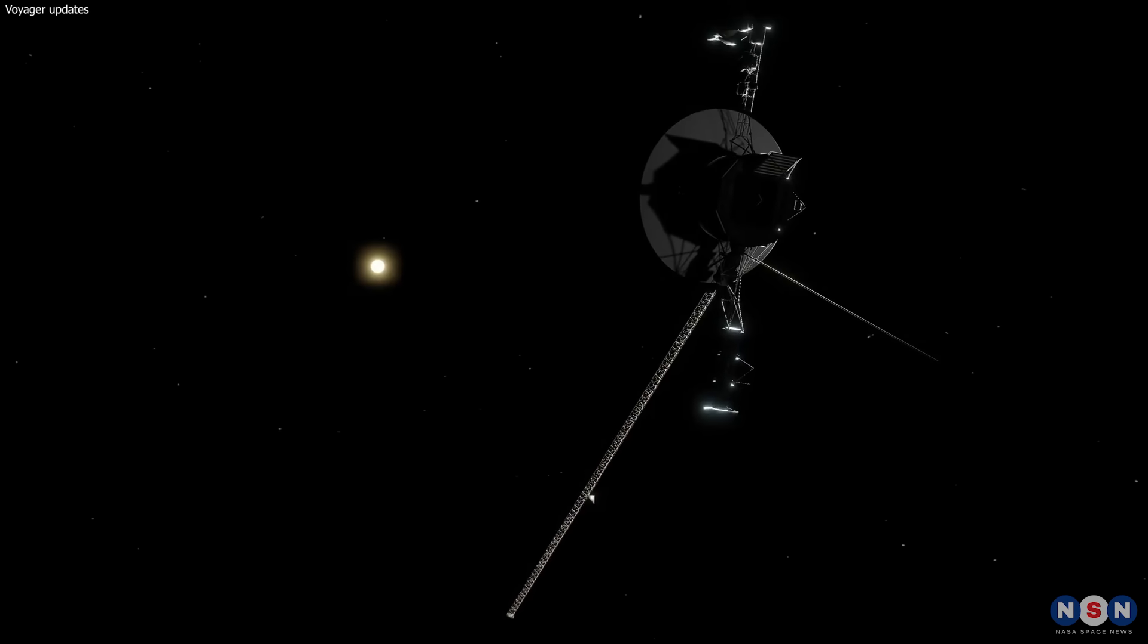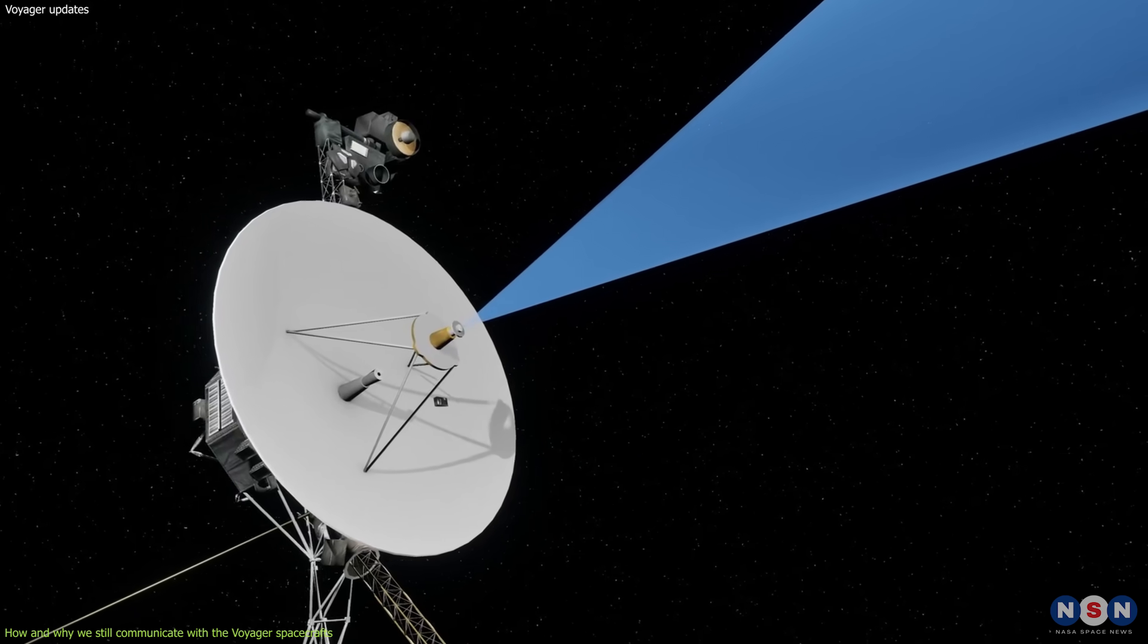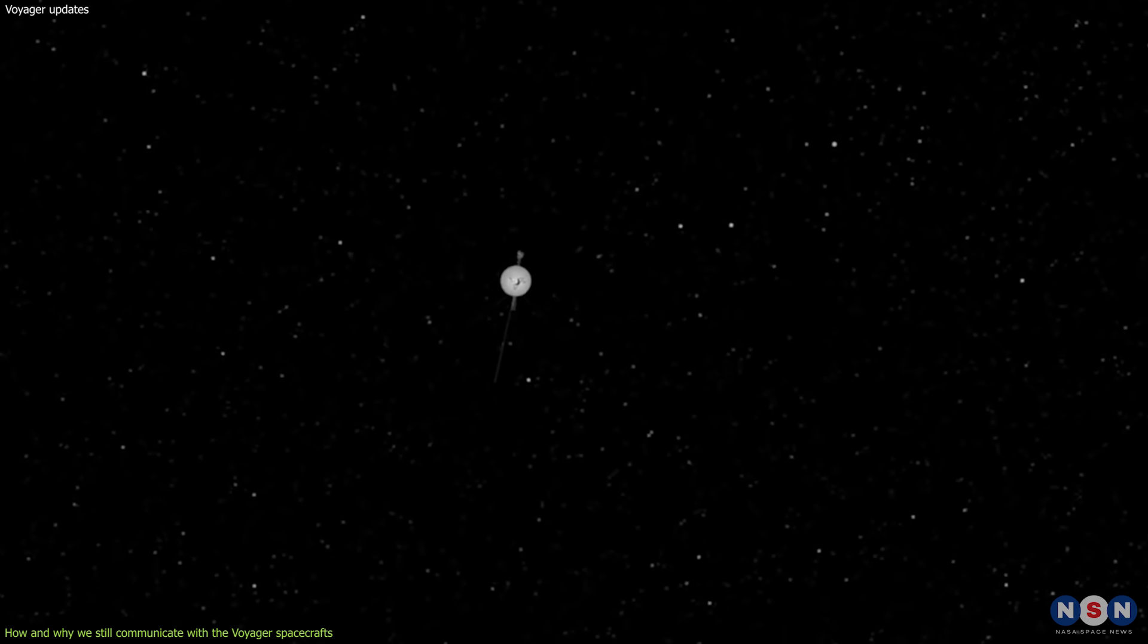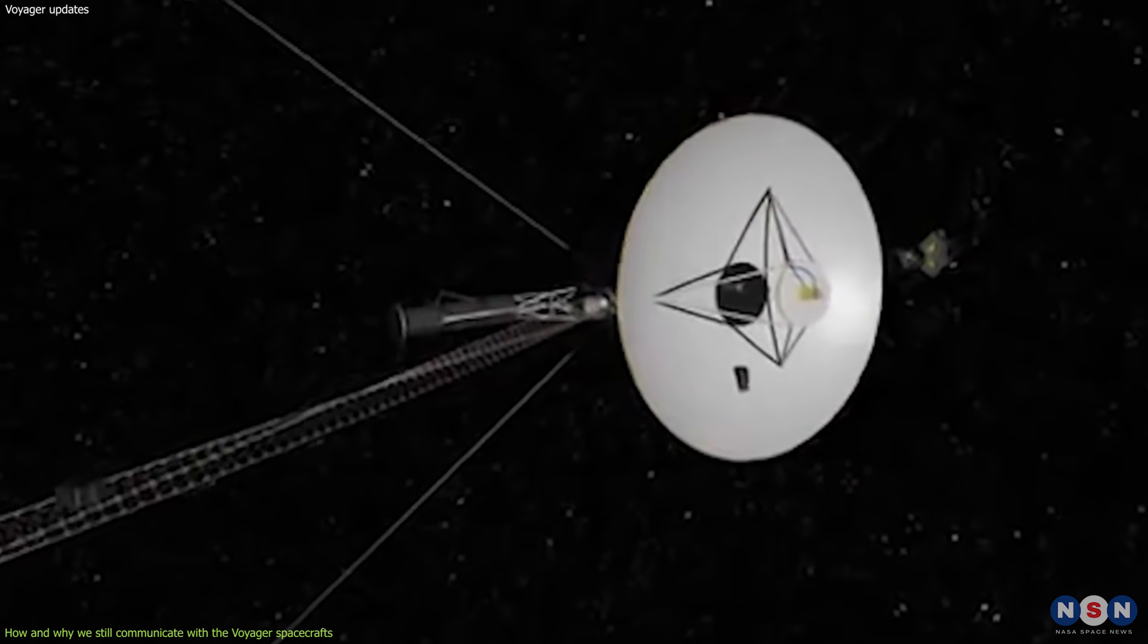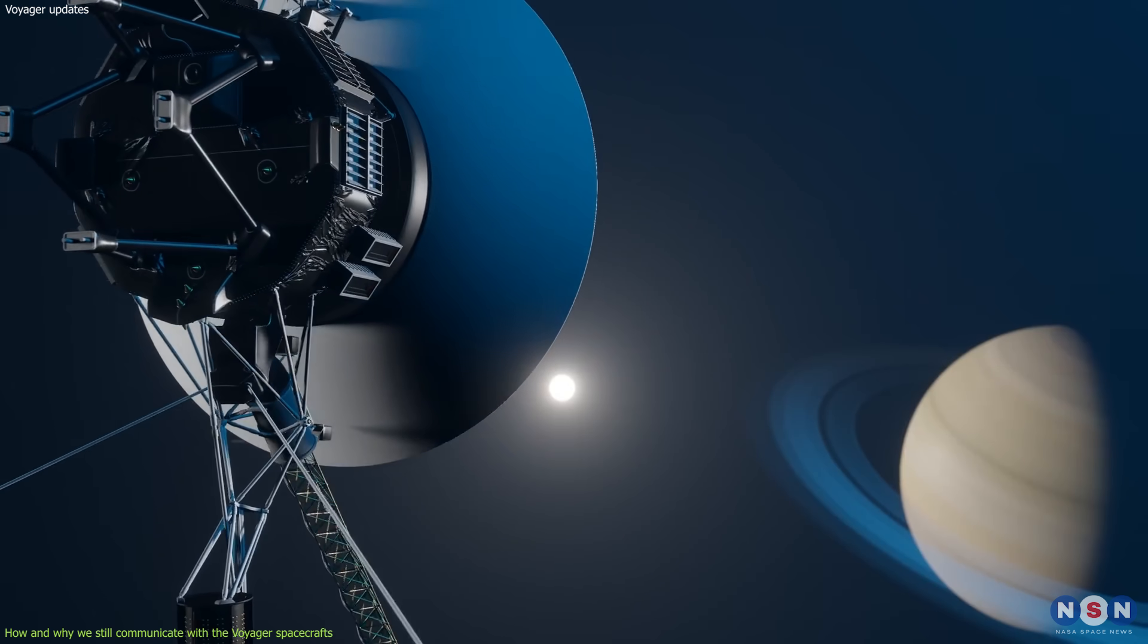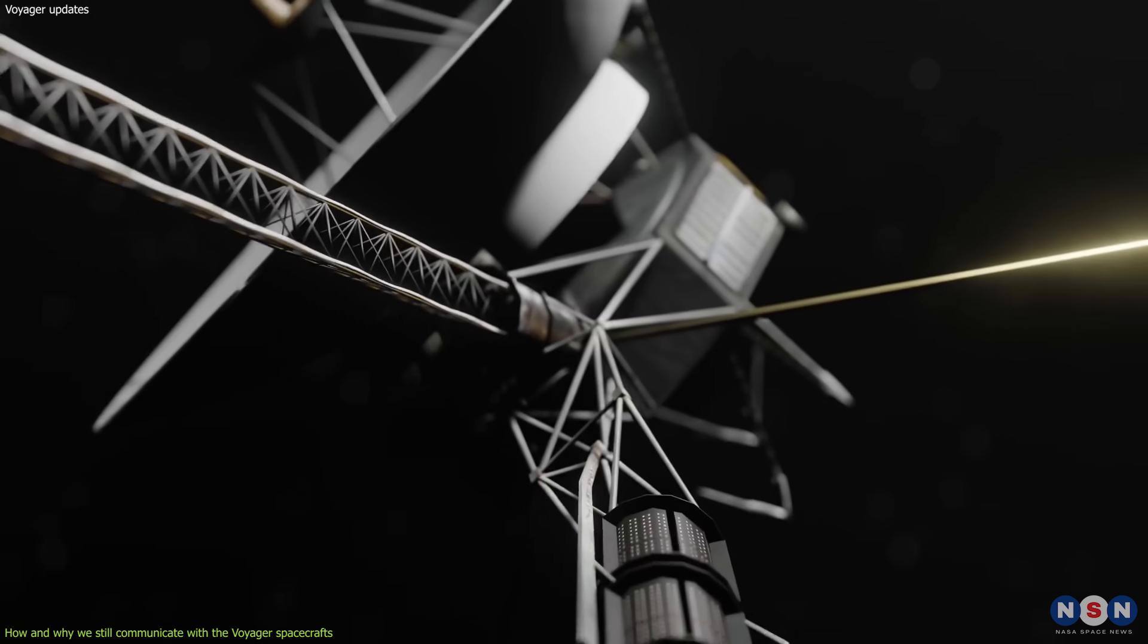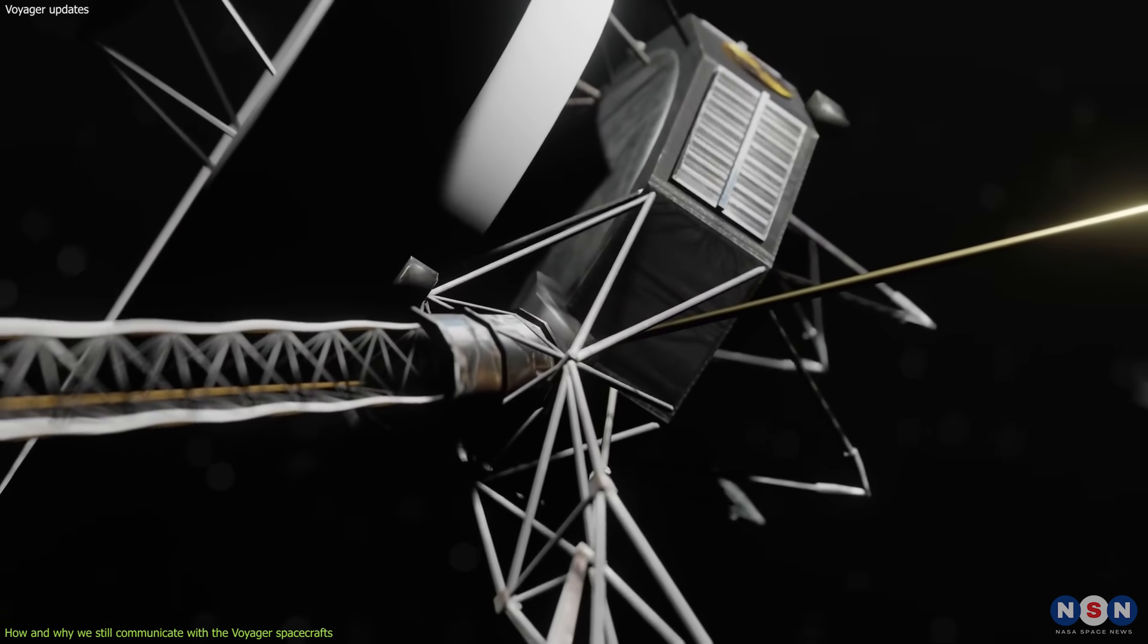The Voyager spacecrafts are equipped with three radio antennas that can transmit and receive signals from Earth. However, since they are moving away from us at high speeds, they need to constantly adjust their orientation to keep in contact. To do this, they use a special mode called roll and hold, which means they rotate around their axis every few months to point their main antenna towards Earth. They also use two smaller antennas to maintain communication during the rotation.